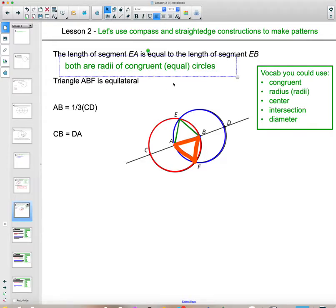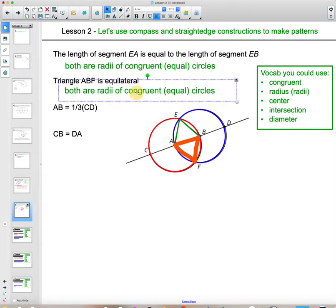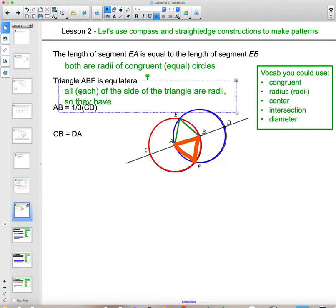Triangle ABF. How do we know that's an equilateral triangle? Again, this is a similar justification because now we know that all, or each of the sides of the triangle are radii. They have to be equal or congruent.